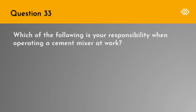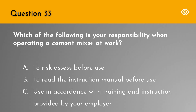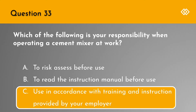Question 33. Which of the following is your responsibility when operating a cement mixer at work? A. To risk assess before use. B. To read the instruction manual before use. Or C. Use in accordance with training and instruction provided by your employer. The correct answer is C. Use in accordance with training and instruction provided by your employer.